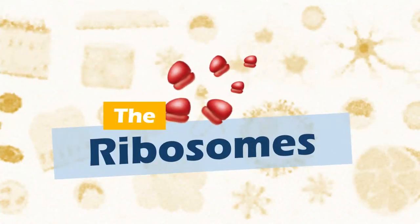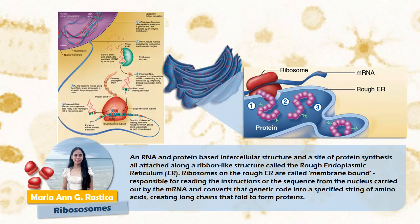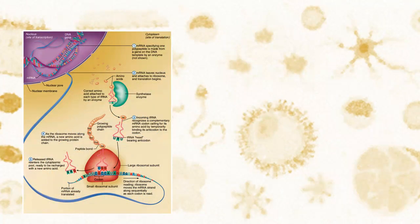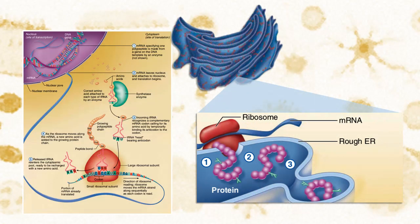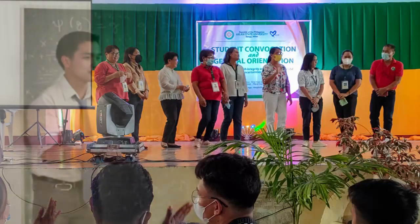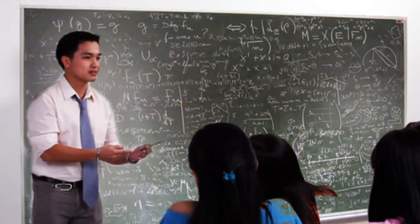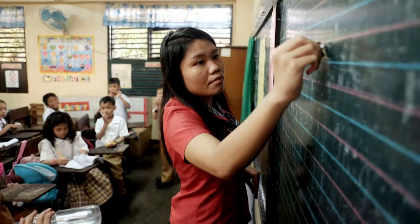Ribosomes. There are about 10 million ribosomes — RNA and protein-based intercellular structures and sites of protein synthesis — all attached along a ribbon-like structure called the rough endoplasmic reticulum. Ribosomes and the rough endoplasmic reticulum are membrane-bound and are responsible for reading the instructions or sequence from the nucleus, carried out by messenger RNA, and converting the genetic code into a specified string of amino acids, creating long chains that fold to form proteins. Just like our teachers and professors, they are responsible for conveying instructions from the university head to the students, teaching, assisting with student development, and publishing scholarly papers and books that help future generations.